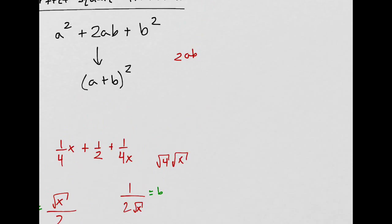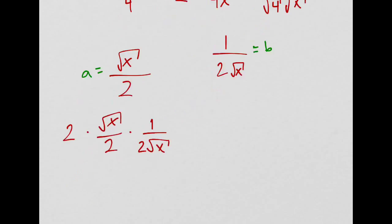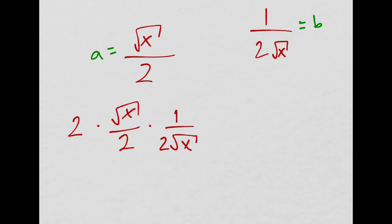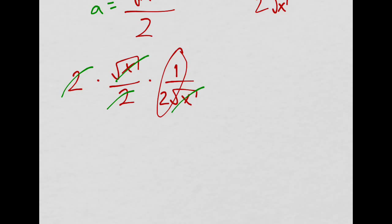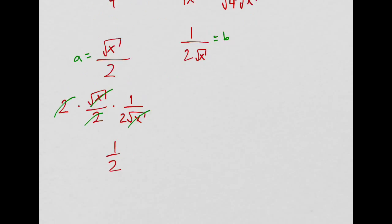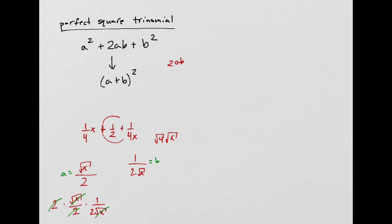So the square root of x cancels. One of those 2's cancel with the denominator of 2. And we're just left with 1 half, which is the middle term.